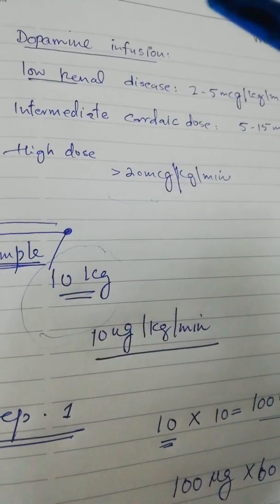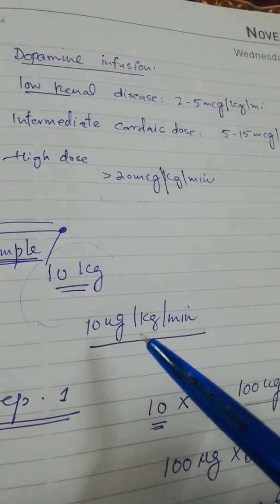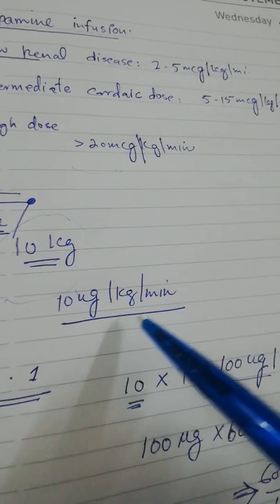The patient is weighing 10 kg, let's say, and we have to start this patient on a 10 microgram per kg per minute dose.